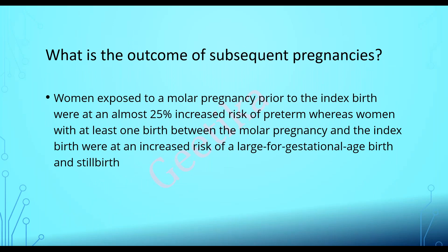Regarding subsequent pregnancy: according to the GTG there is a 25% increased risk of preterm birth in subsequent pregnancies after GTN treatment. Women with at least one birth between the molar pregnancy and the index birth were at increased risk of large for gestational age babies and stillbirth. So immediately after molar pregnancy there is increased chance of preterm, and in the third consecutive pregnancy there is risk of large for gestational age babies and stillbirth.